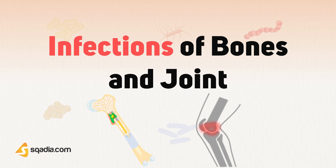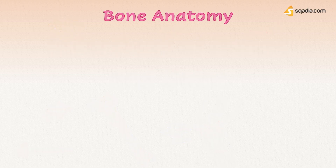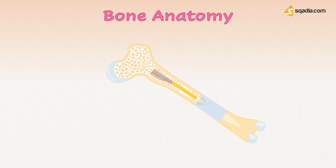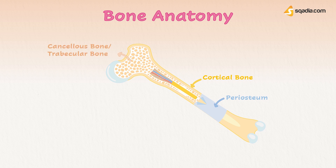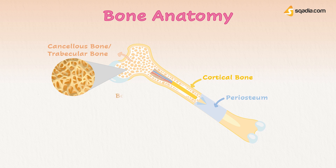So to start off, let's talk about the general anatomy of a bone. A typical macroscopic structure of bone includes the periosteum, which is a fibrous membrane that covers the outside of bone; the cortical bone, which is the outer layer of the bone; the cancellous bone, or the trabecular bone, which is the inner spongy structure that resembles a honeycomb; and the inner bone cavities containing the bone marrow.